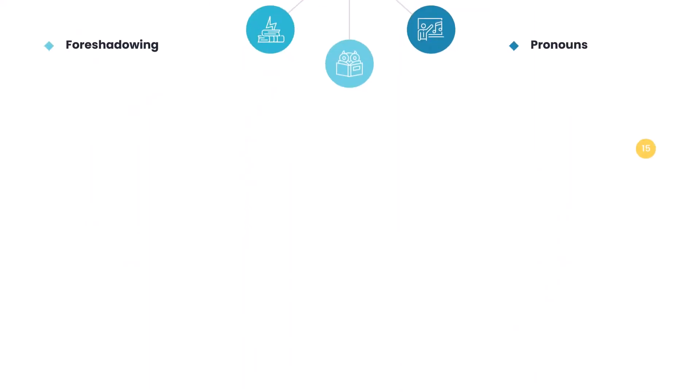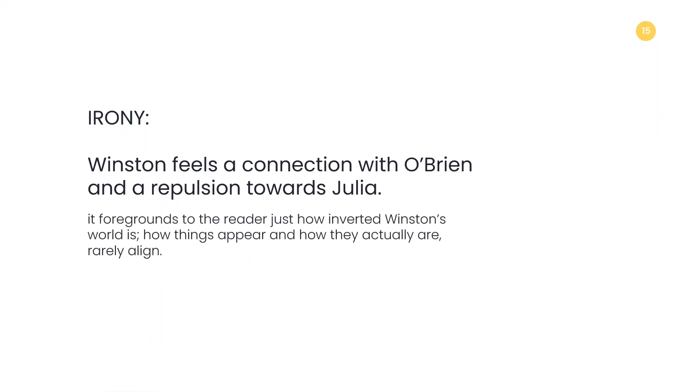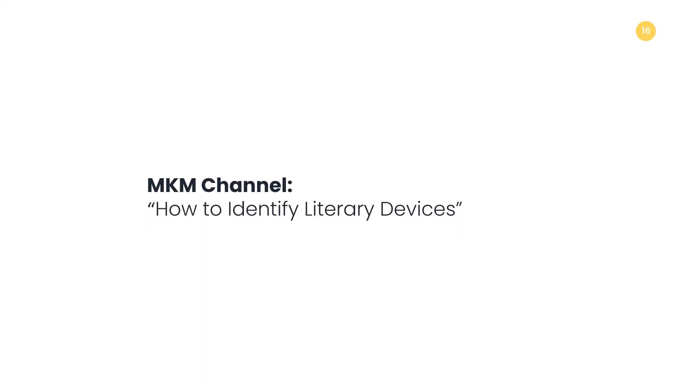Let's take irony. When Winston reveals that he feels a connection with O'Brien and a repulsion to Julia, the irony of these feelings is only revealed later in the text, but retrospectively. The effect of that irony is that it foregrounds to the reader just how inverted Winston's world is — how things appear and how they actually are rarely align. You need to learn devices and practice identifying them. If you're struggling to find them within a text, you can go to the other video on the MKM channel on how to identify literary devices. Once you have learned them, these techniques will help you locate them within your text quickly and easily.